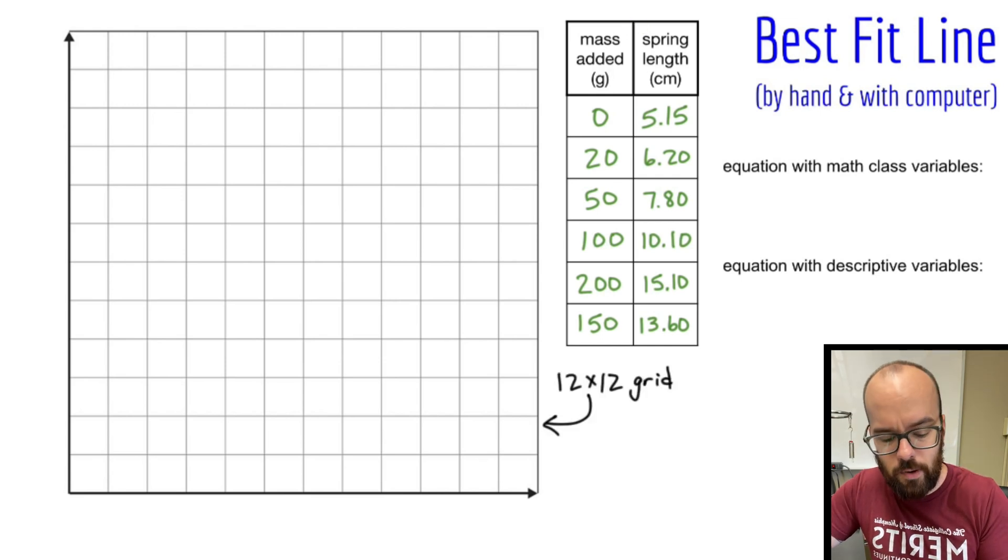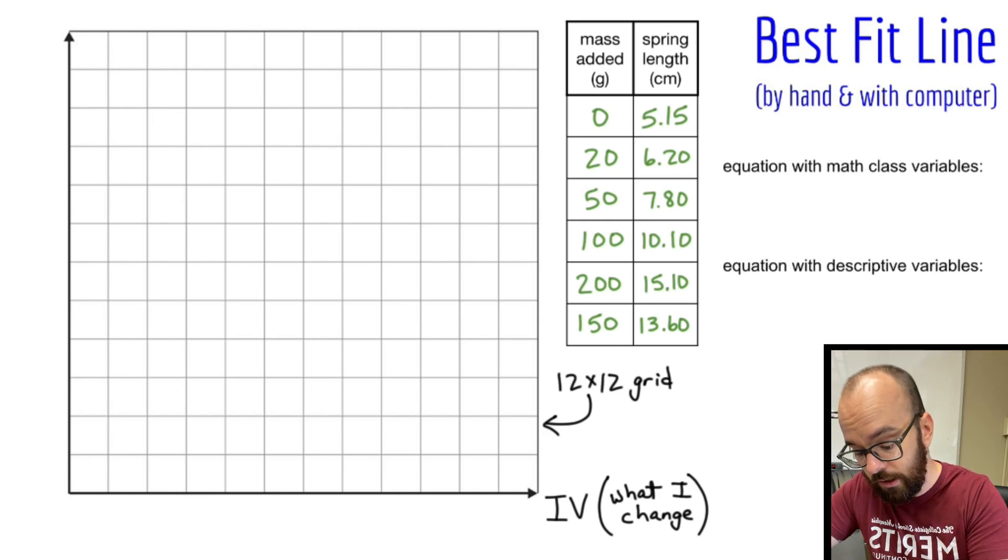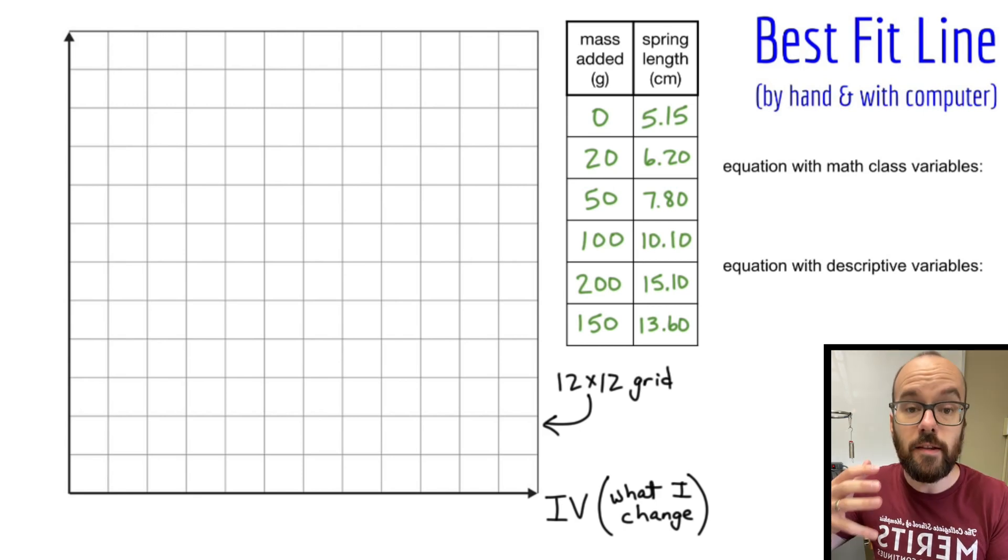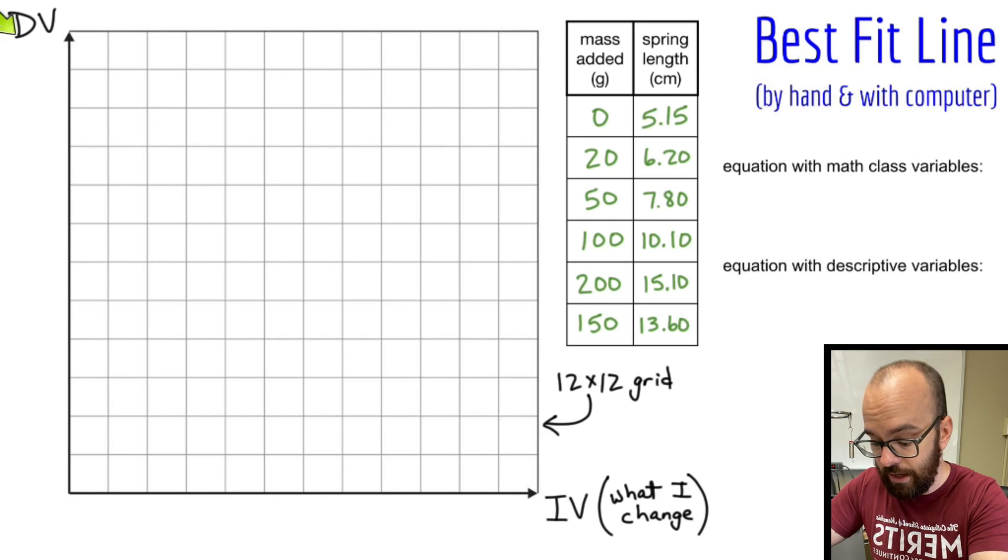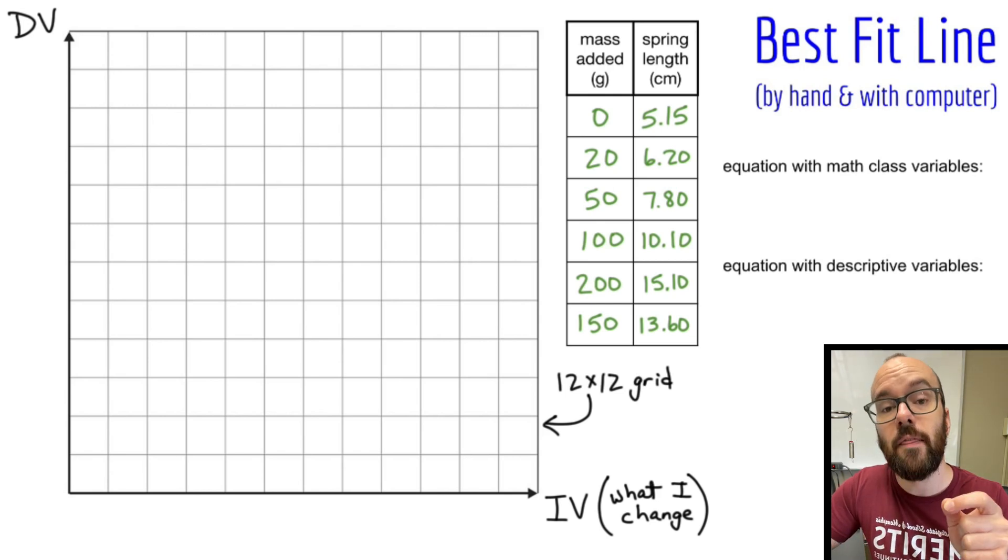I need to think about which is my independent dependent variable. Your independent variable always by convention should be going on the horizontal axis. The independent variable is what I change each time. I was controlling how much mass I added to the spring. The dependent variable will plot on the vertical axis. The dependent variable is the variable that's changing in response to my independent variable. I was adding the mass and measuring how much the spring length changed as a result. My independent variable is causing my dependent variable to change.